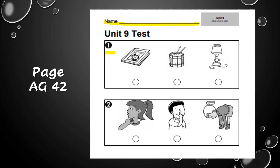Number two: which picture shows someone touching a body part that vibrates to make sound? Do we touch our throat to make sound, do we touch our nose to make sound, or do we touch our toes to make sound? Which body part do we touch to make sound — throat, nose, or toes? When you're finished, turn your paper to the next page.